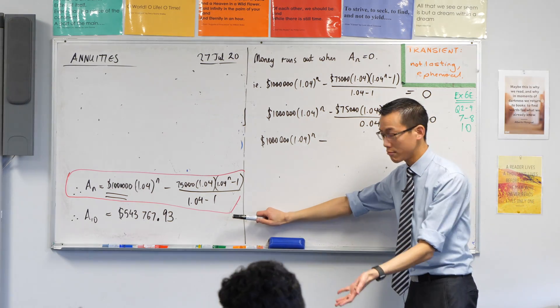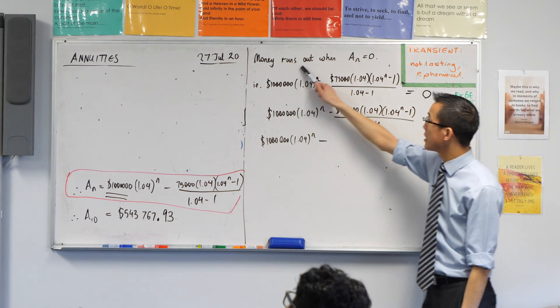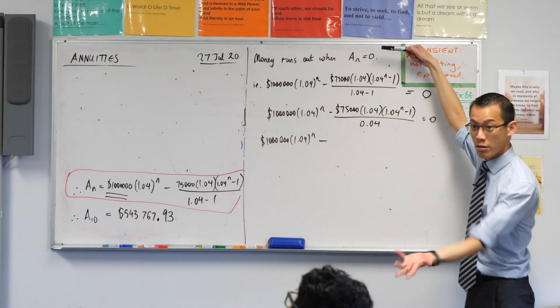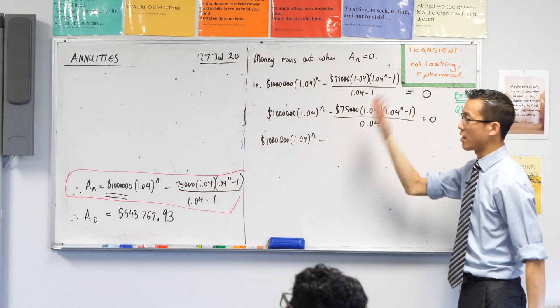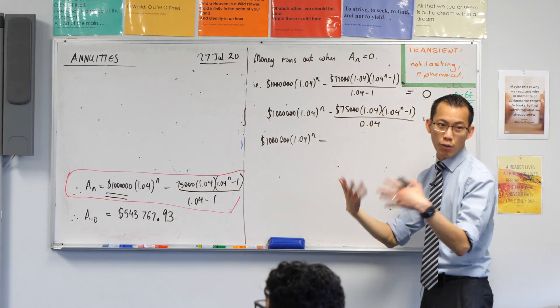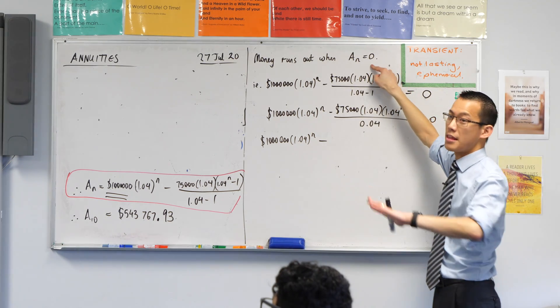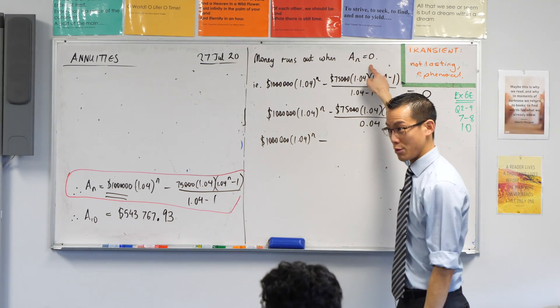I've started from this, A of n, and then I've said, well the money runs out when it gets to zero. Do you agree with that? At some point, like I don't know, n equals 20 or 30 or 40, at some point it will hit zero and then you've got no more money to withdraw.